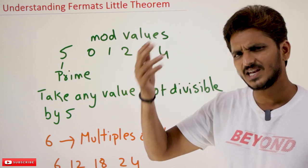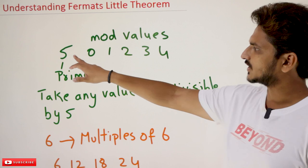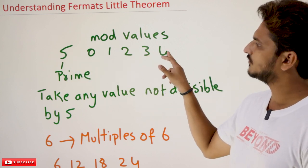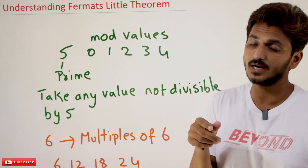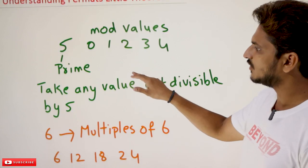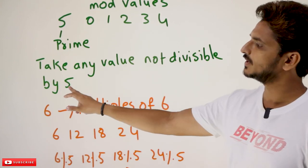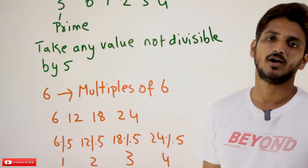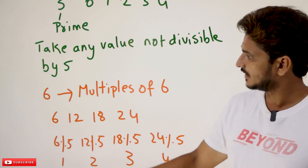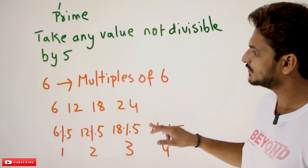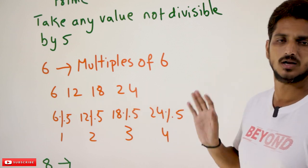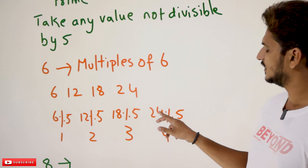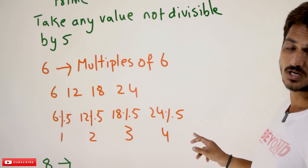Let's take this. 5 is a prime number. You take any prime number — what are the modulus values that are going to be provided using 5? They are 0, 1, 2, 3, 4. These are the modulus values you are going to get by using 5. Now take any value that is not divisible by 5. So 6 is not divisible by 5. Because 5 is a prime number, you take multiples of 6: 6, 12, 18, 24, and so on. 6 mod 5 = 1, 12 mod 5 = 2, 18 mod 5 = 3, 24 mod 5 = 4. Next number is 30. 30 mod 5 = 0.